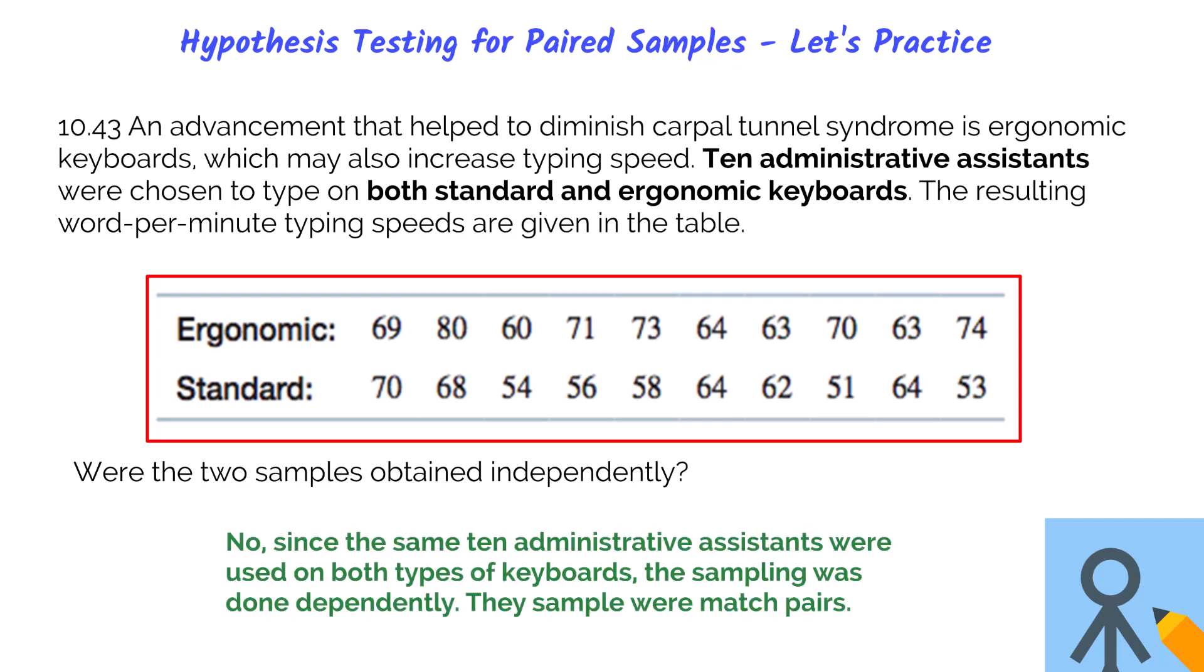So were the two samples obtained independently from each other? No, since the same 10 administrative assistants were used to test both types of keyboards, the sampling was done dependently. That means we have a sample of matched pairs.